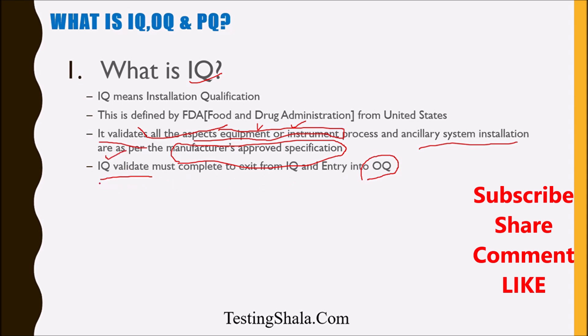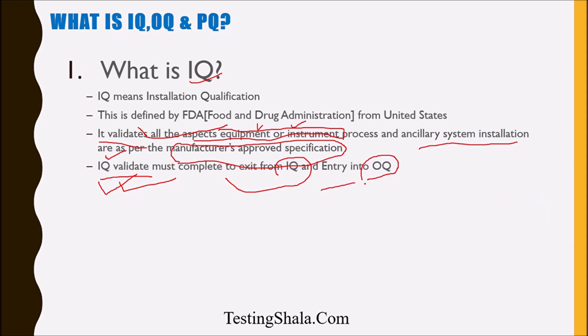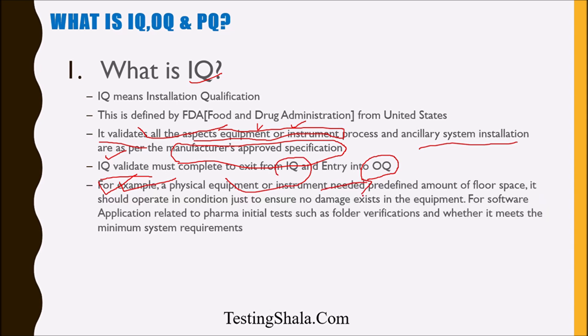In order to enter into Operational Qualification, we should complete Installation Qualification first. Once Installation Qualification is completed successfully, that would be the exit for IQ and we move on to OQ. Let's take an example of how Installation Qualification operates. Let's say one pharmaceutical equipment has been manufactured and it has come for installation.